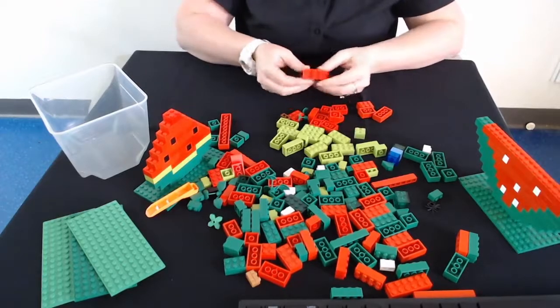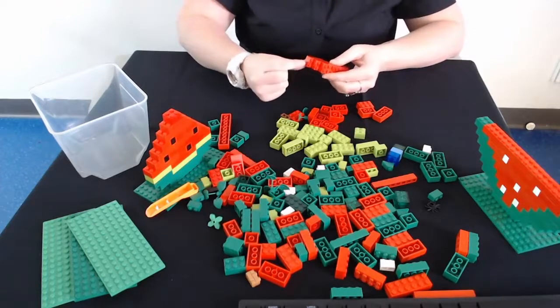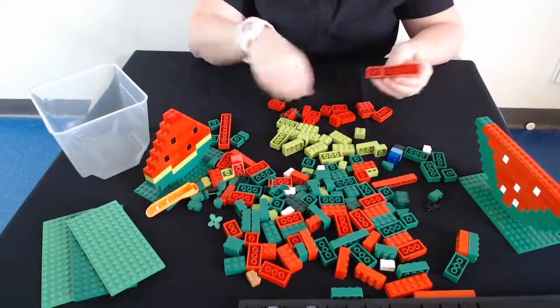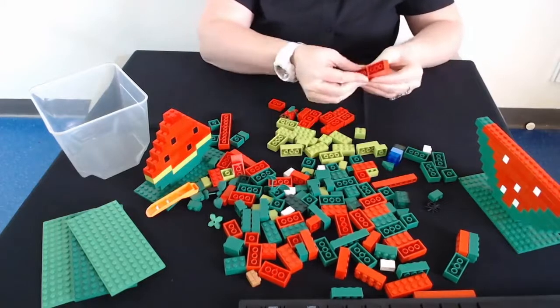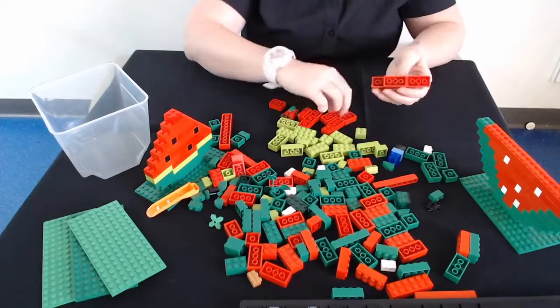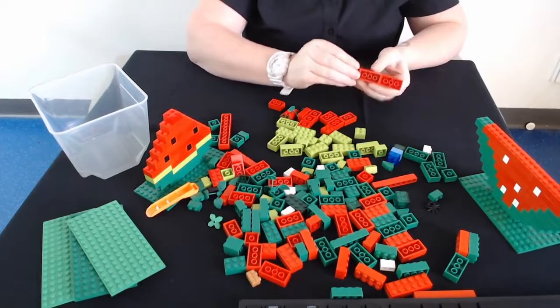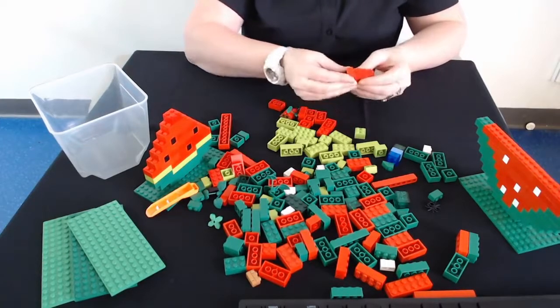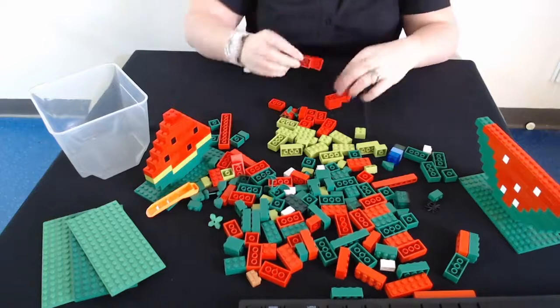All right, so we're going to just start building them up slowly. Okay, so again, creating the little staircase like pattern between each layer to form the rounded shape. Oh no, and I've broken it.